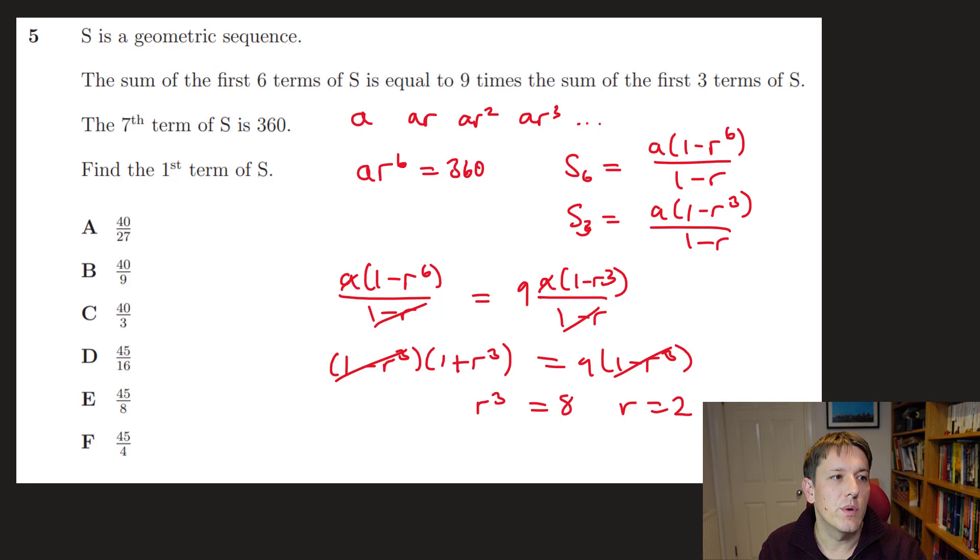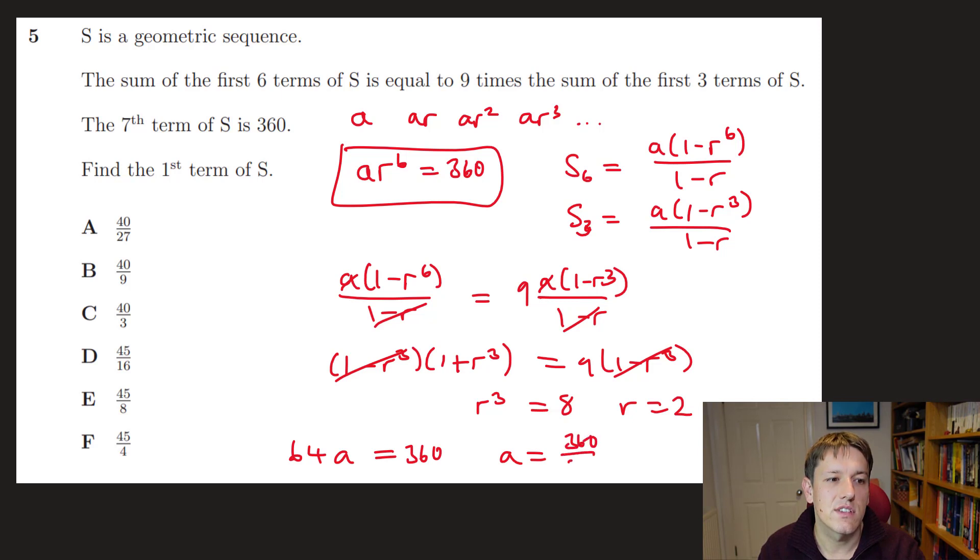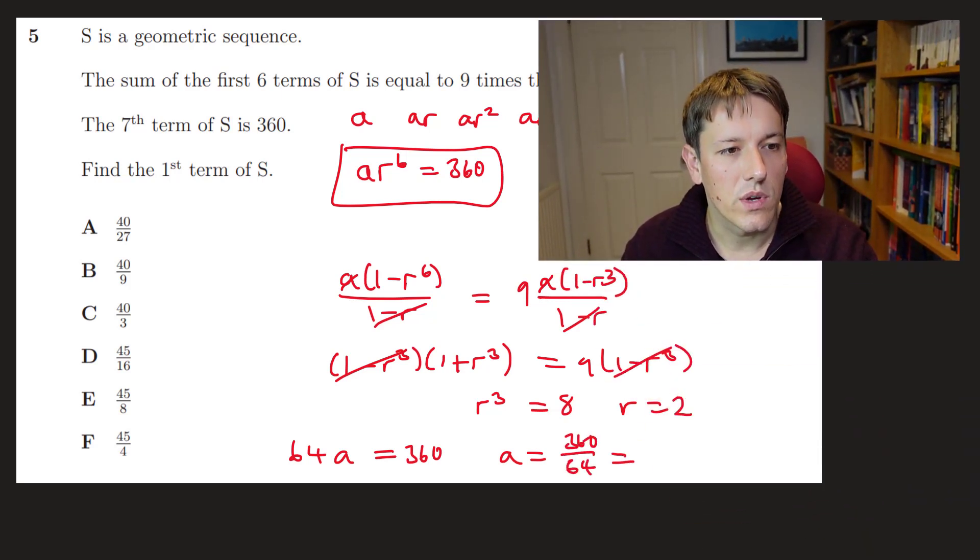And then we know we want the first term of the sequence, which is a. And I can use the last bit of information here: ar⁶ = 360. So 2⁶, that's 2³ squared, so that's 8² or 64. So I've got 64a = 360. So a is 360/64. We've definitely got, well, factor of 4 top and bottom for sure, 90/16. In fact, I could have done 8 there. So that's 45/8. And that is one of the answers here, which is E.